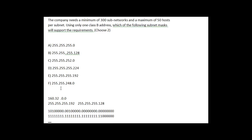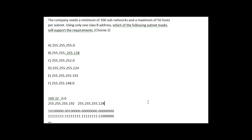Looking at the answer choices — it says choose two — the correct answers are E and B. I used the principle of borrowed bits: ones represent the networks and zeros represent the possible hosts. That's how you answer this question. It's hard to look at the answers and assume right off the bat without considering the starting point and what bits we're borrowing.